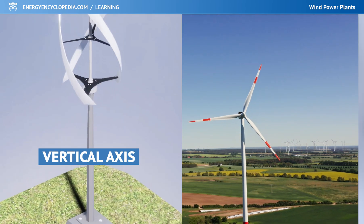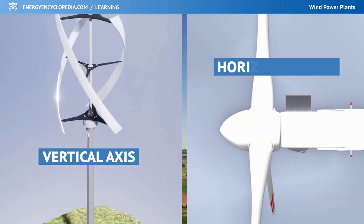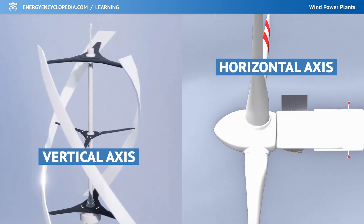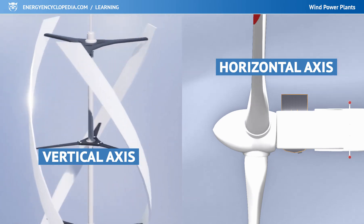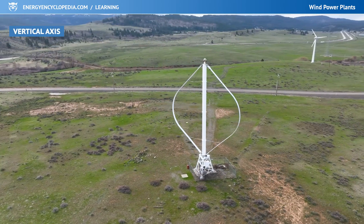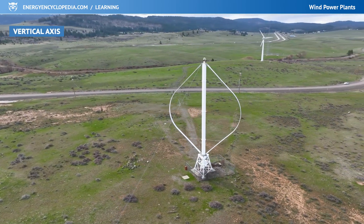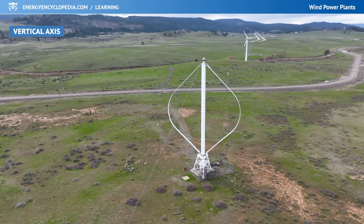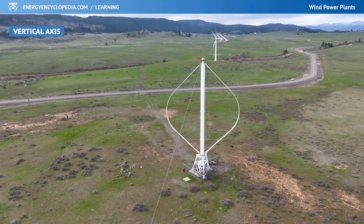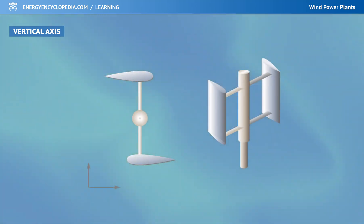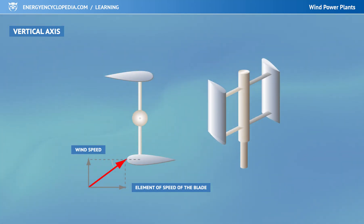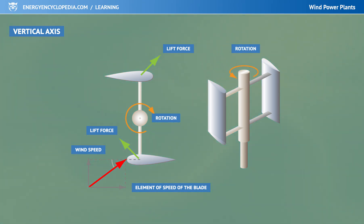The turbine shaft can be positioned vertically or horizontally. With a vertical axis, the generator and other equipment can be placed on the ground, which simplifies construction and maintenance. In addition, the power plant does not need to be rotated with the wind — it will spin in any orientation.